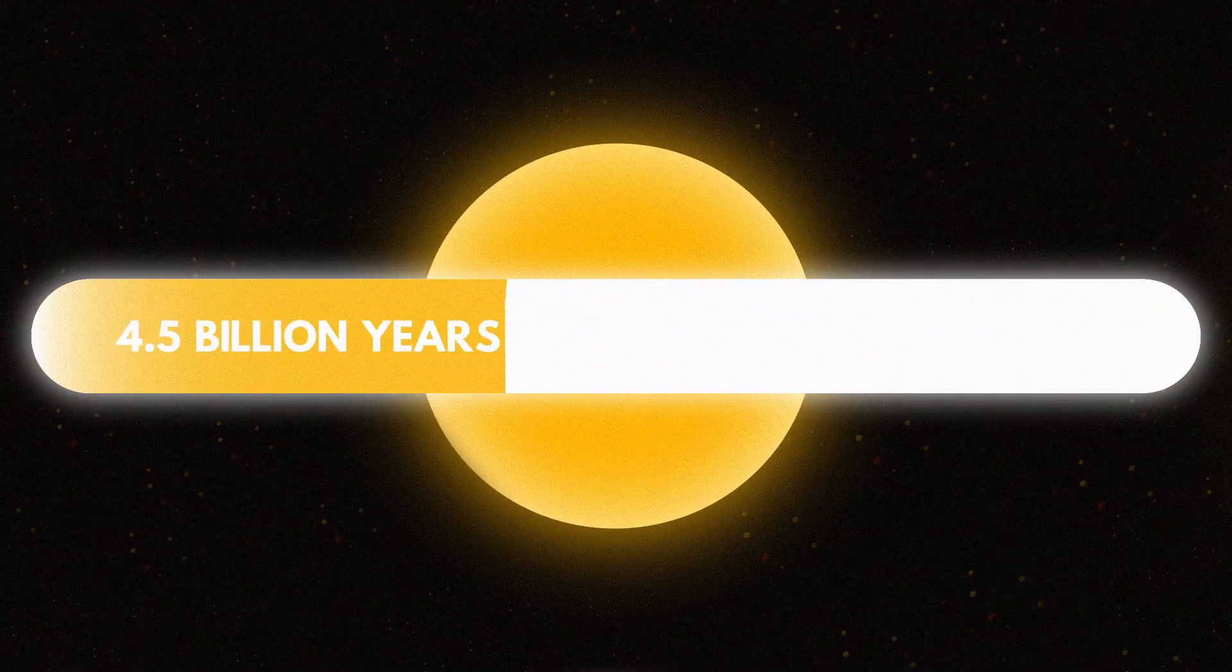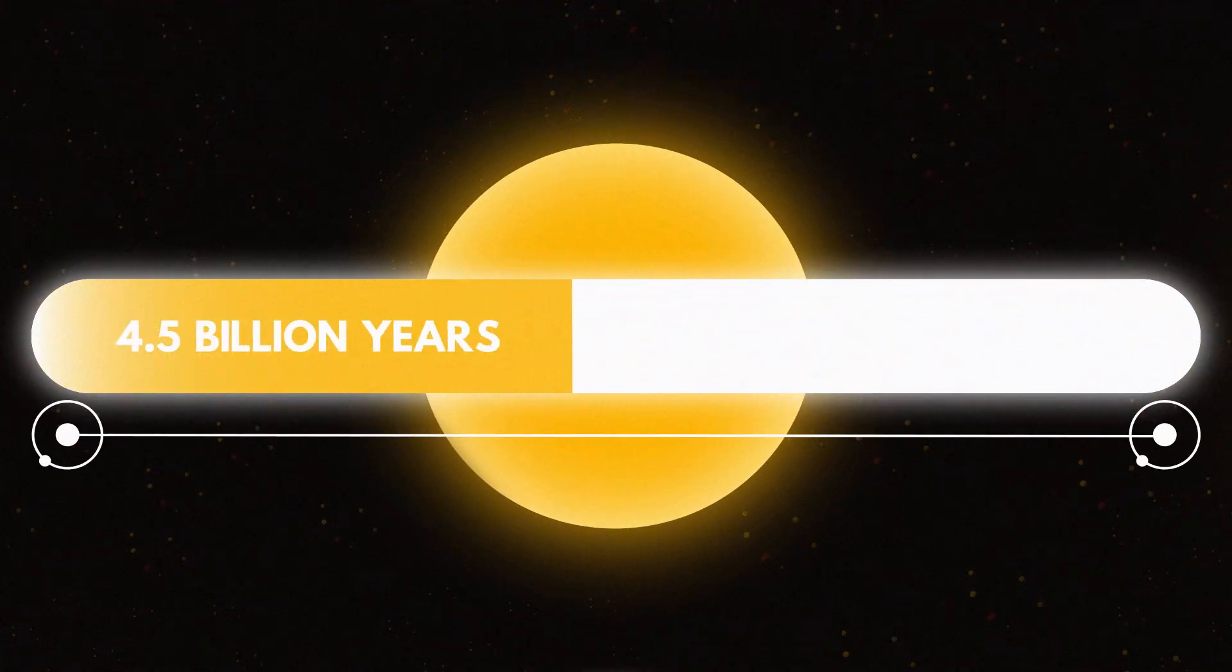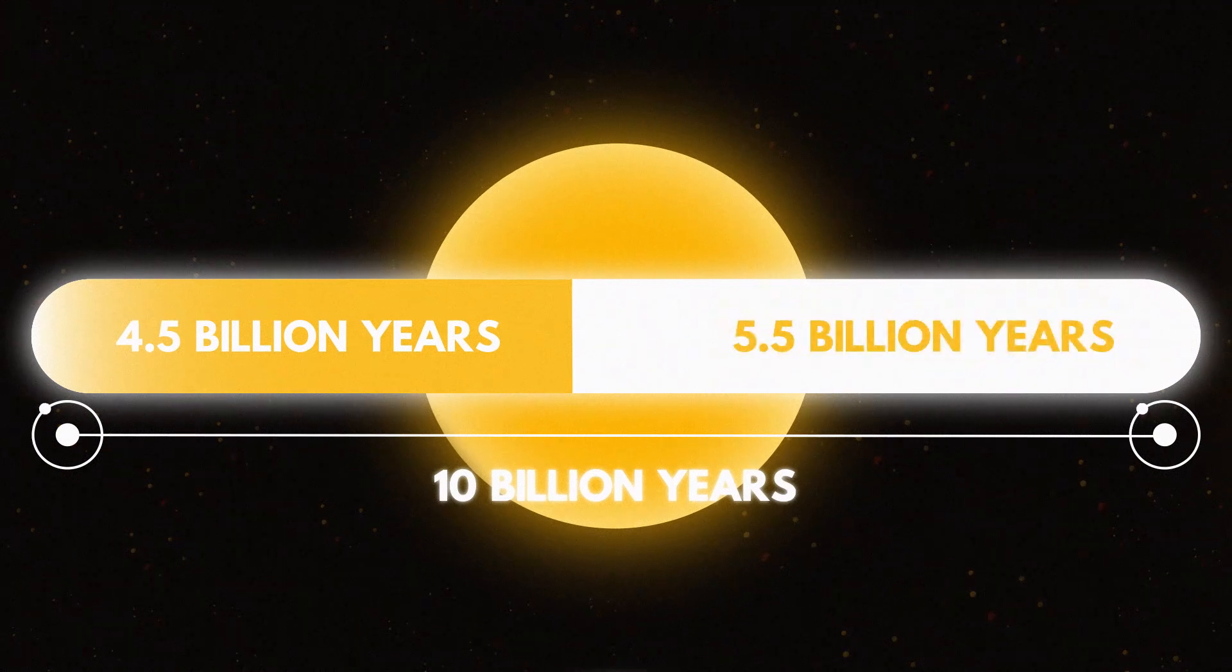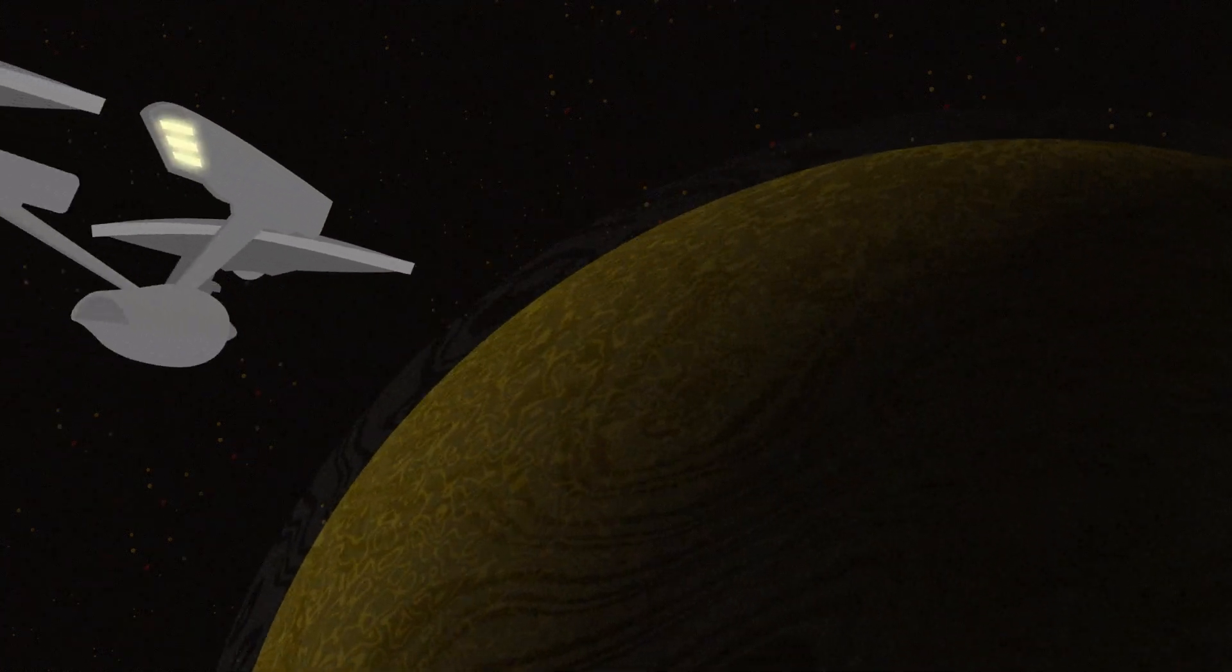The sun has been shining for about 4.5 billion years, and it has enough hydrogen fuel to burn for about 10 billion years, meaning it has around 5.5 billion years left, which means that we have plenty of time to find another home.